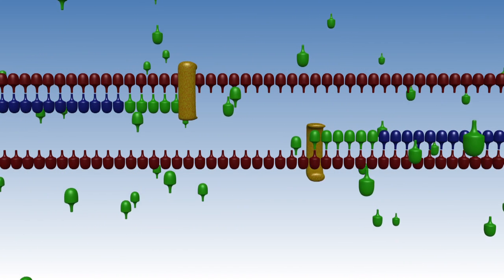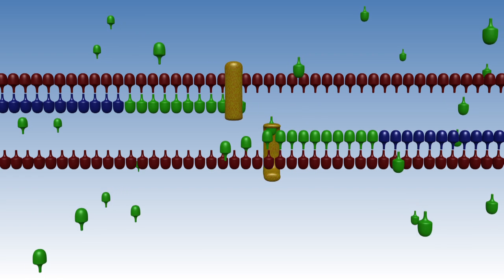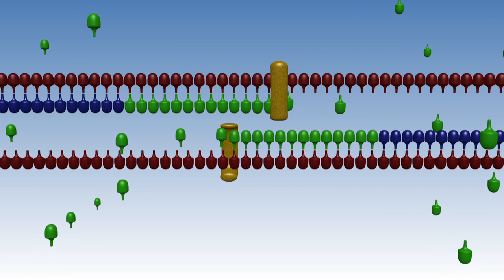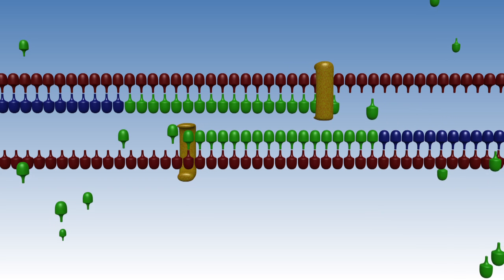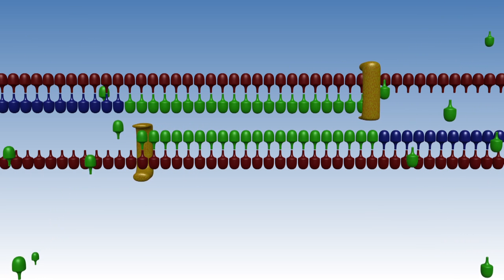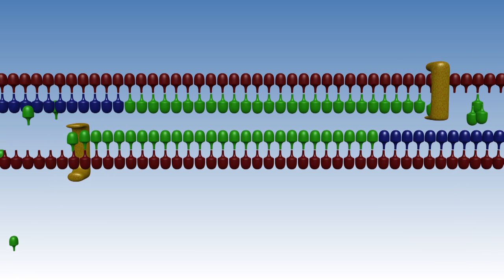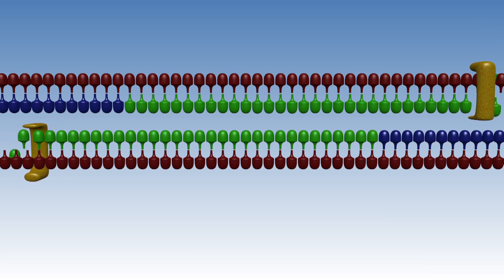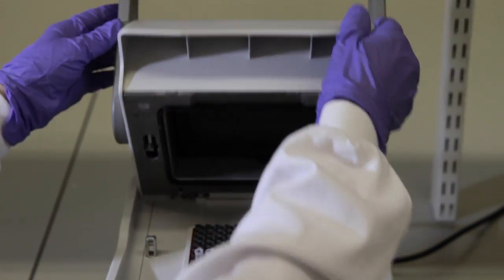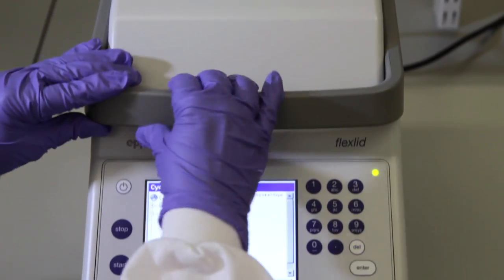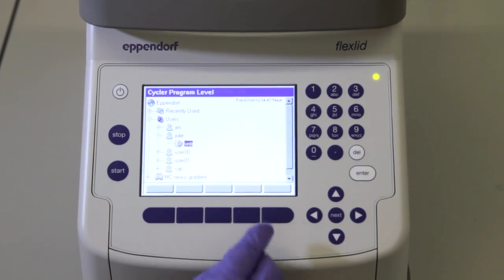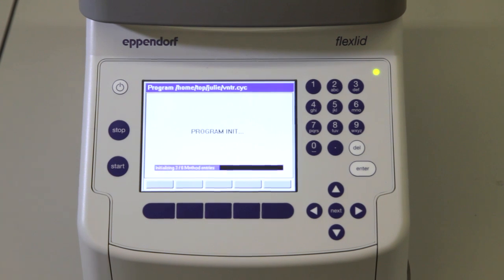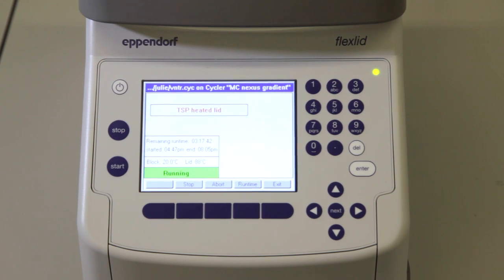The final step in this first amplification cycle is the extension at 72 degrees centigrade. This is the optimum temperature for the DNA polymerase to build the complementary strand, following on from the 3' end of the primer, using the free nucleotides. The polymerase adds them at around 50 to 100 bases per second, so the duration of this step will depend on the length of your target, but 30 seconds to 1 minute is usually long enough for most products.